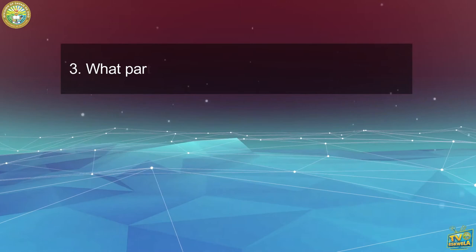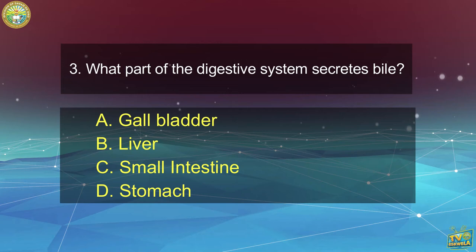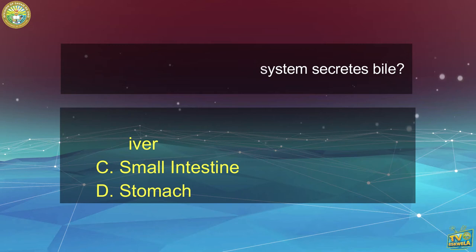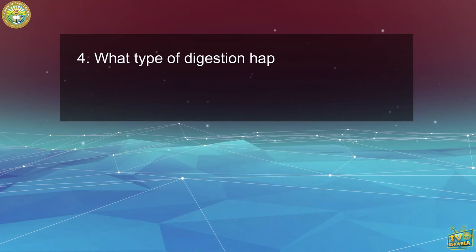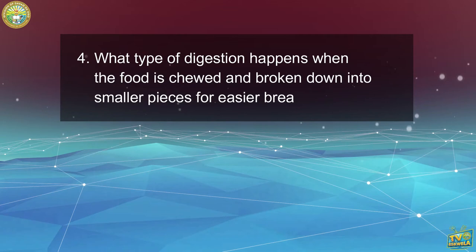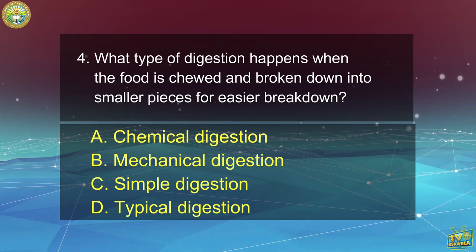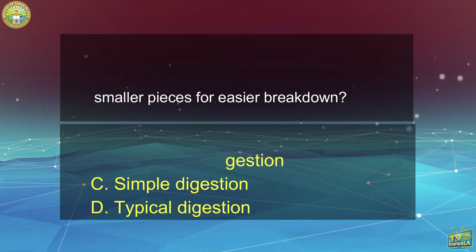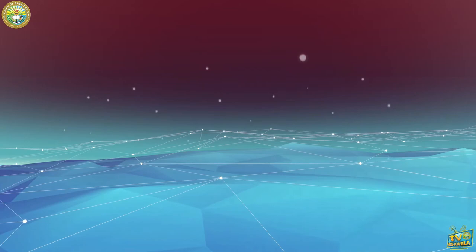Number 3: What part of the digestive system secretes bile? Number 4: What type of digestion happens when food is chewed and broken down into smaller pieces for easier breakdown? A. Chemical digestion, B. Mechanical digestion, C. Simple digestion, D. Typical digestion. If you answered letter B, Mechanical digestion — you got it right!